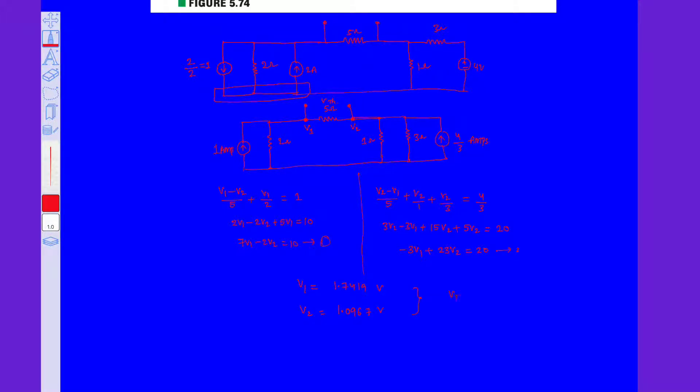Clearly, VTH is nothing but V1 minus V2. So V1 is 1.7419 minus 1.0967. Clearly, the VTH is 0.6452 volts.